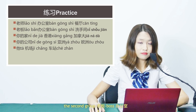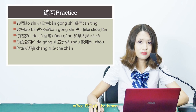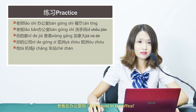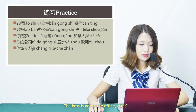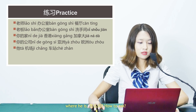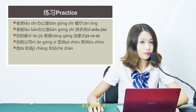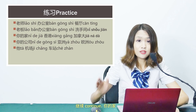该你了 — your turn. 第二组 — second group. Person: 老板 (boss). Place 1: 办公室 (office). Place 2: 洗手间 (bathroom). 老板在办公室吗? — Is the boss in the office? 老板不在办公室 — The boss is not in the office. 老板在哪里? — Where is the boss? 老板在洗手间 — The boss is in the bathroom.